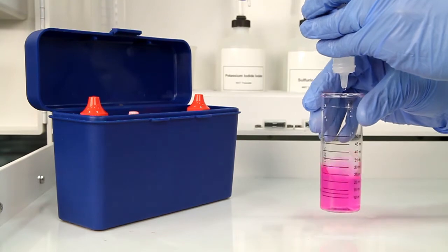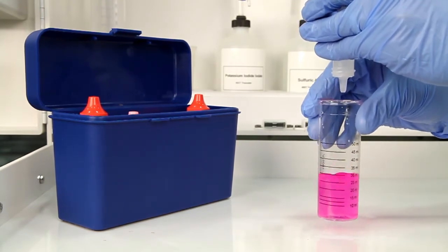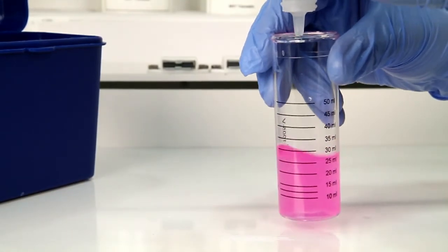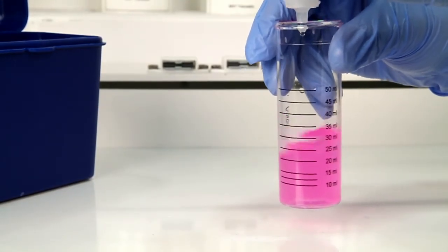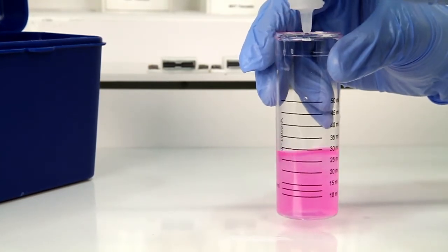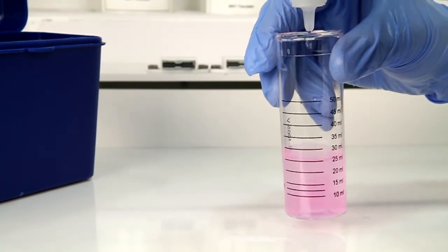You must count the number of drops during this step. The bottle contains a dropper tip, so hold the bottle vertically to get a consistent drop size. Continue counting drops and swirling the vial after each drop. The titration is complete when the sample color changes from pink to colorless.